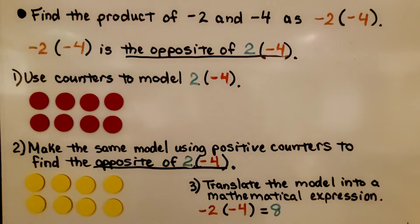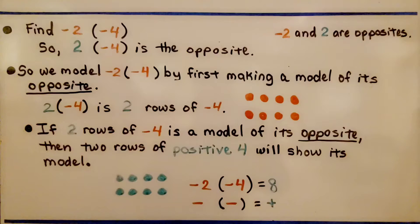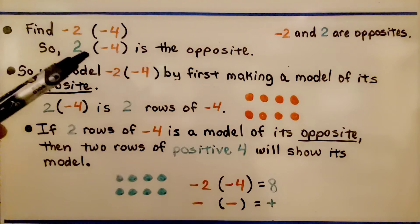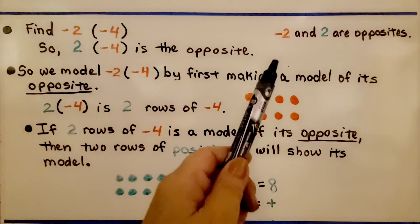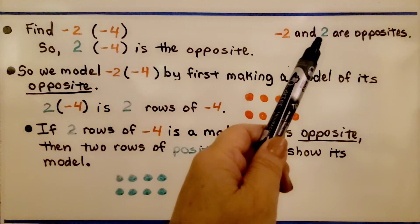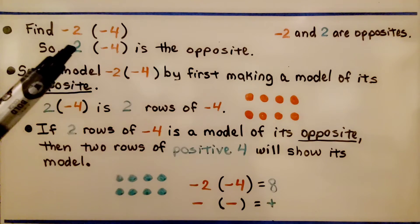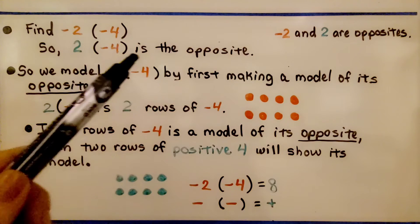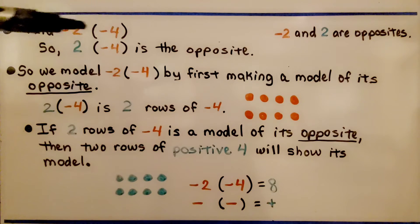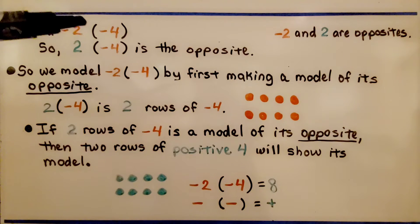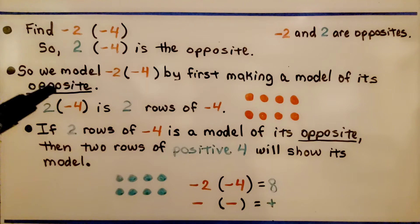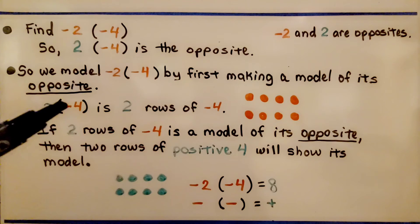Now if that's confusing, stick with me — I'll explain. We need to find negative 2 times negative 4. Looking at negative 2, negative 2 and positive 2 are opposites. So positive 2 times negative 4 is the opposite of this equation. We can model negative 2 times negative 4 by first making a model of its opposite, positive 2 times negative 4.